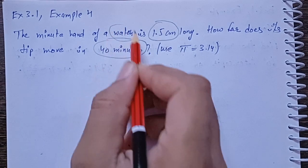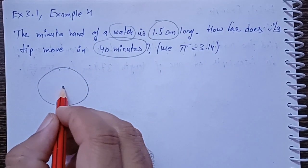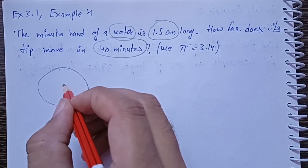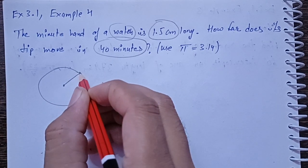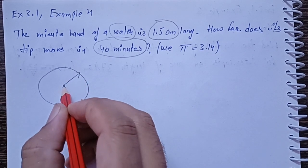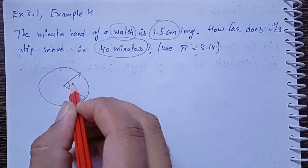First we have to draw a watch. There is a watch. The minute hand is 1.5 cm long. In 40 minutes, it covers some distance. So, take theta.